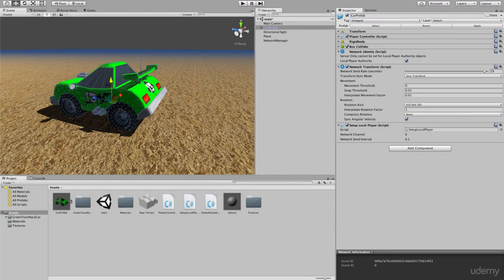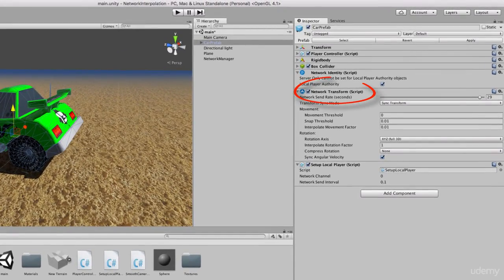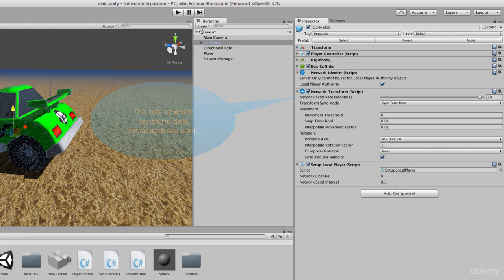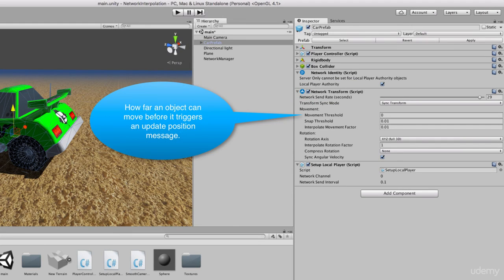Interpolation in Unity is handled by the network transform component. It allows you to control the rate at which transform data messages are sent, and how far an object can move before it triggers an update position message.